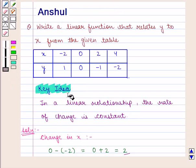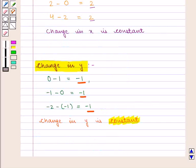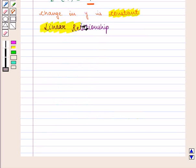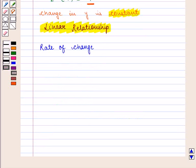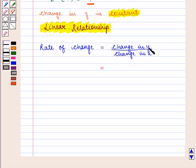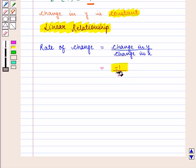From the key idea we know that in a linear relationship, the rate of change is constant, and here we see that both the change in x and the change in y are constant. So we can now find the linear relationship between x and y. The rate of change is given by change in y upon change in x, which is minus 1 divided by 2, so the rate of change equals minus 1 over 2.